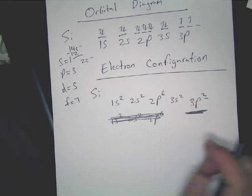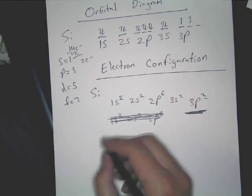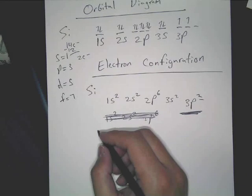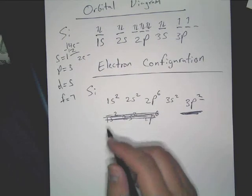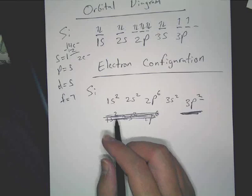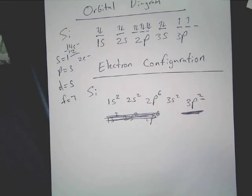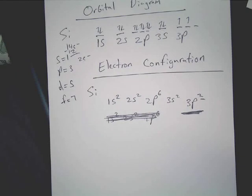Student: Is it possible to run out at 3s instead of at 3p? No — for silicon specifically it ends at 3p, but for any element, you just only write up to what you have. You don't need to write anything beyond that, ever.